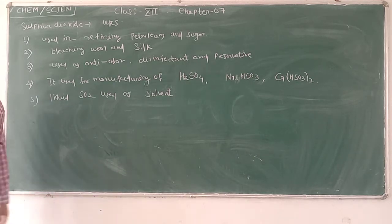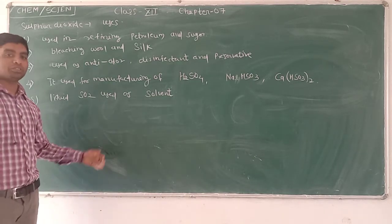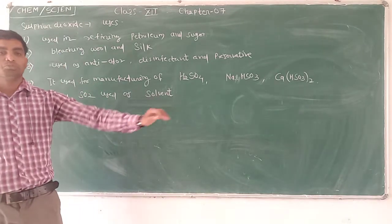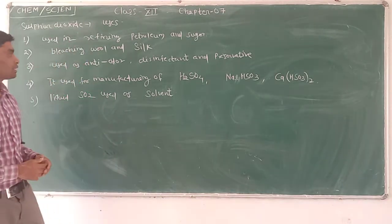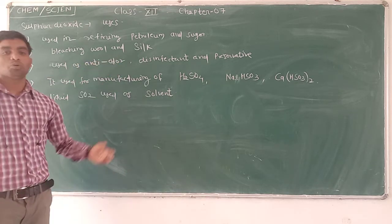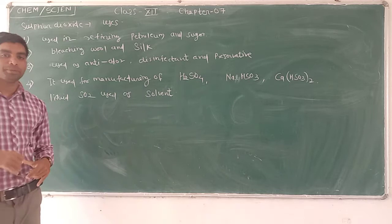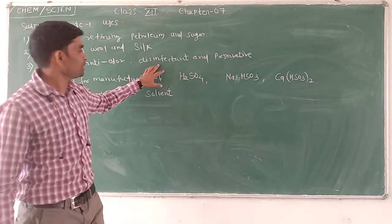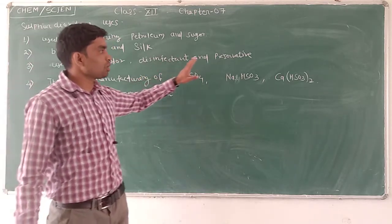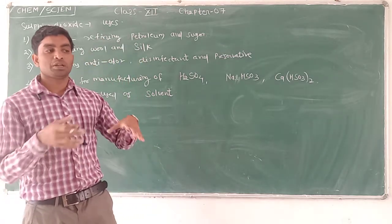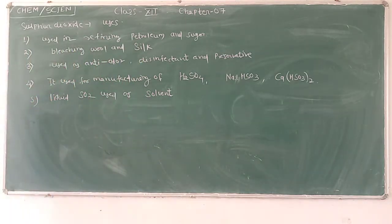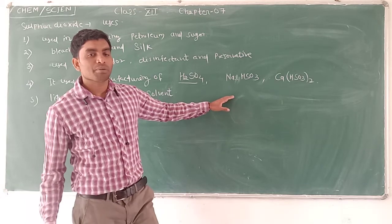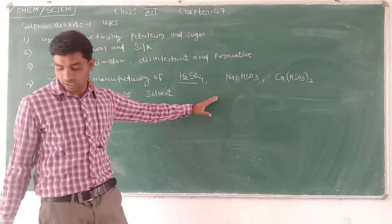Uses of sulphur dioxide: It is used in refining of petroleum and sugar. It is used as an anti-chlorine disinfectant and preservative. Sodium bisulphite and calcium bisulphite are used in bleaching and as preservatives for food materials.